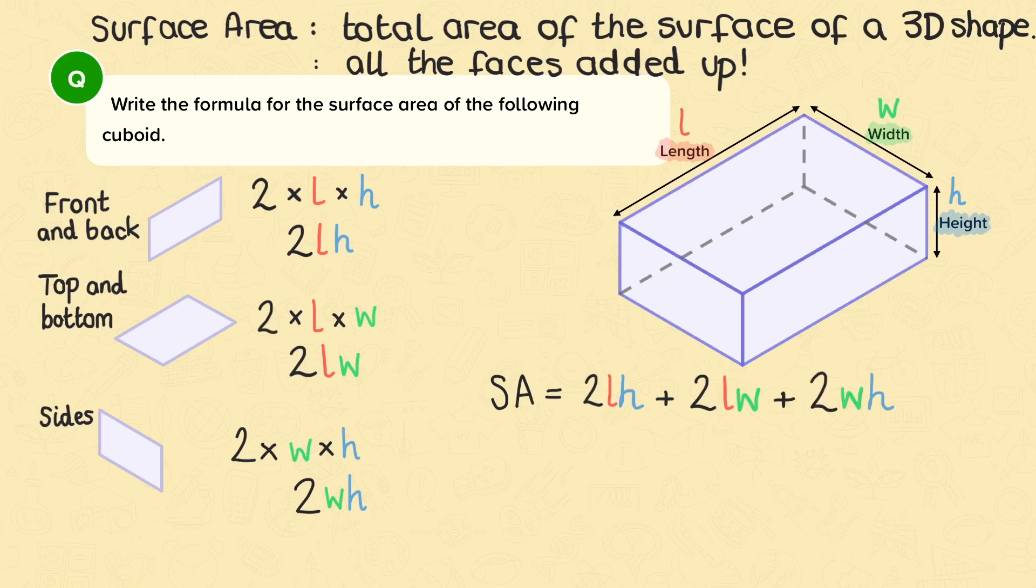This can also be written as the surface area equals 2 times LH plus LW plus WH, all in brackets. This surface area will be correct for all cuboids. So we have found the correct formula.